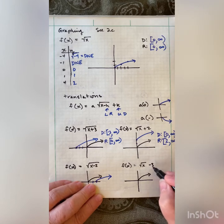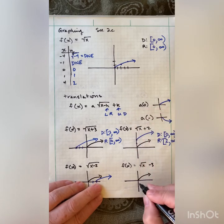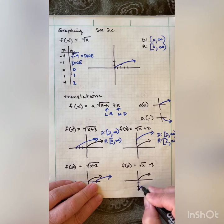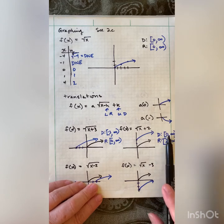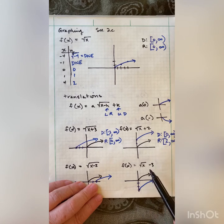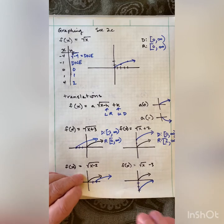This one has a negative 3 behind it — it makes it go down 3 and everything shifts 3 places down. Domain is the same, and for the range instead of positive 2 we'll have negative 3.